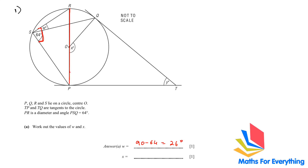Therefore, W will be 90 minus 64, which is 26 degrees. Next, we have to find X. I hope you remember the circle theorem which states that the angle at the center is twice the angle at the circumference. So X is 64 times 2, which is 128.